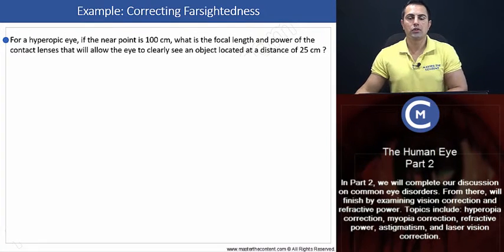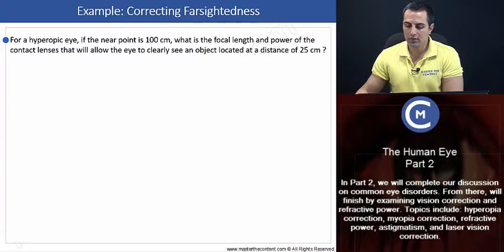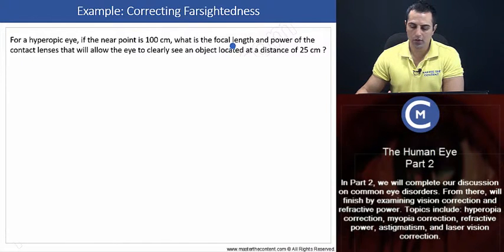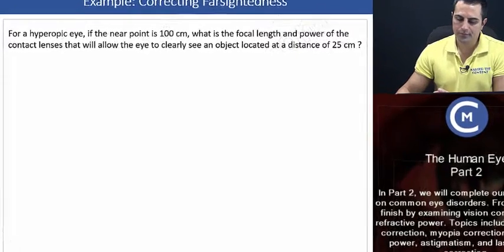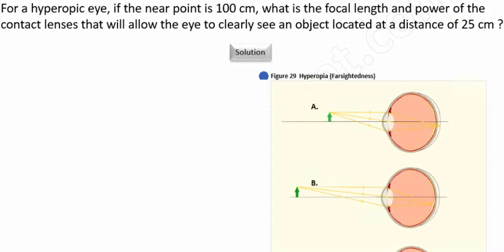I encourage you to pause the video and try to solve this problem independently, otherwise you're more than welcome to follow along. We'll first go ahead and find the focal length, and then we'll find the power. And to really understand what's going on, let's begin by taking a look at a schematic here of the problem. Now, in Figure 29A here,